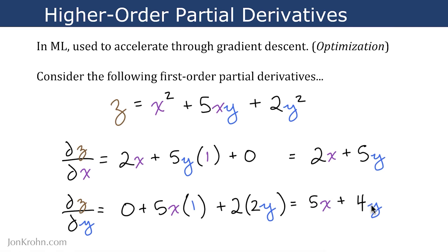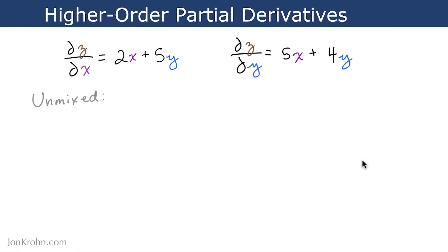So those are our first-order partial derivatives. I'm going to take screenshots of these first-order partial derivatives and bring them to the top of this slide. Now we can talk about second-order partial derivatives. There are two types: unmixed and mixed. We'll deal with the unmixed ones on this slide and the mixed ones in the next slide.